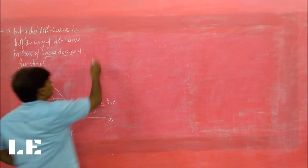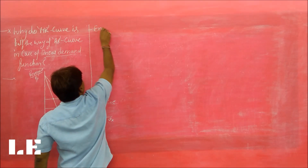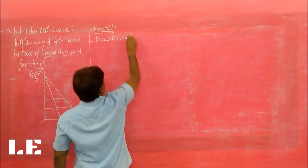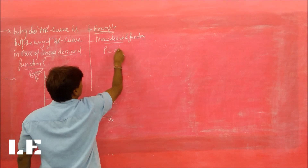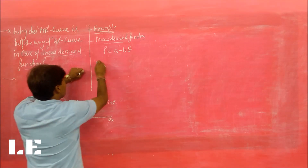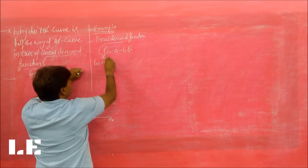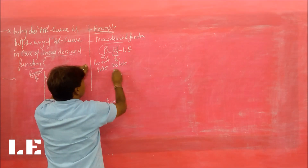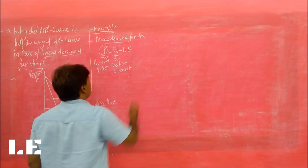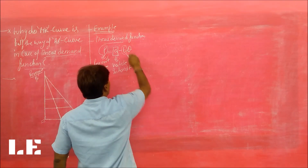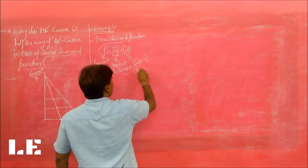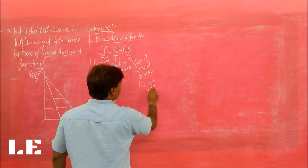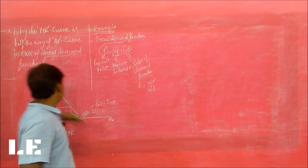Let's see the reason — let's prove it with an example. I assume that the linear demand function is: P = a − bQ. Here P is the per unit price, 'a' is the vertical intercept, and 'b' is the slope of the demand function. The slope of the demand function means b = dP/dQ — vertical change over horizontal change.